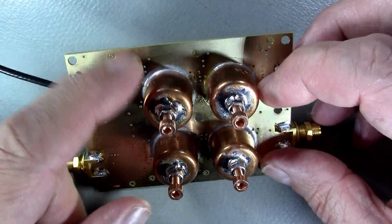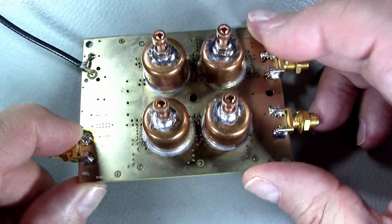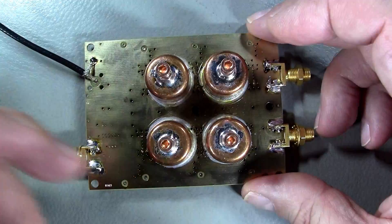I started with the pipe cap filters, four of them, two on the receive branch, two on the transmit branch.